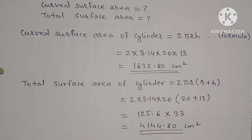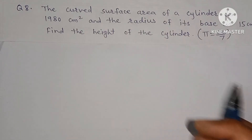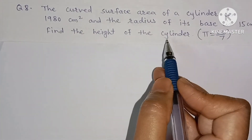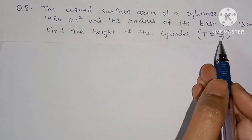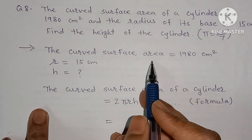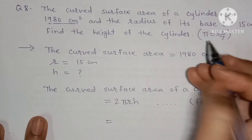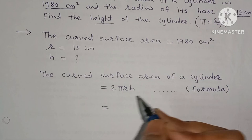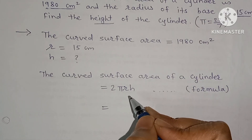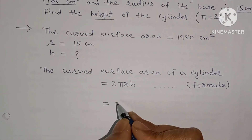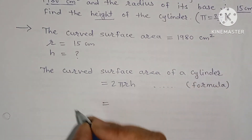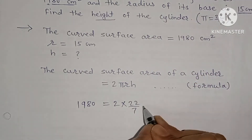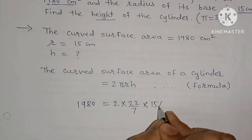The last question: the curved surface area of a cylinder is 1980 square centimeter and the radius of its base is 15 cm. Find the height of the cylinder. Take π = 22/7. Given: CSA = 1980, r = 15. Using CSA = 2πrh: 1980 = 2 × (22/7) × 15 × h.